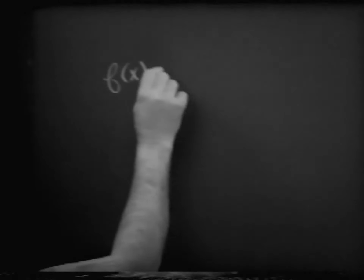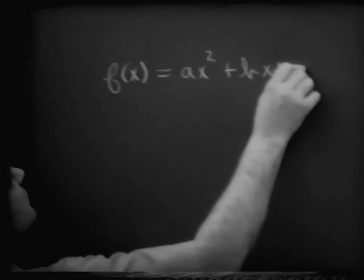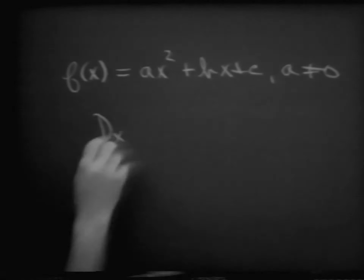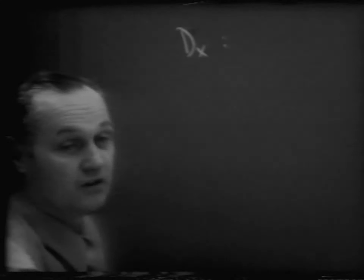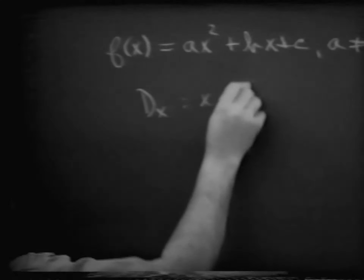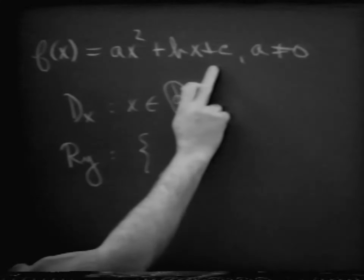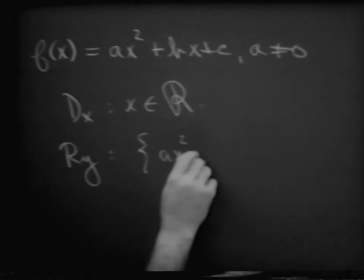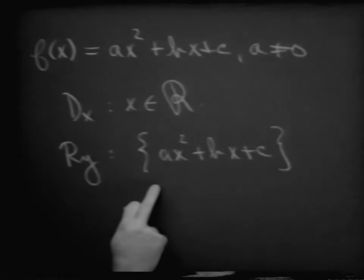Remember, if we were to think in terms of a function as f of x, then it's going to be equal to ax squared plus bx plus c, where a is not equal to zero. Every time we talk about a function, we have some domain. The domain of x is going to be over the set of real numbers, and the range in this case is going to be that set of elements which will be the second element of our ordered pair — ax squared plus bx plus c, whatever that number happens to be for any given value of x.